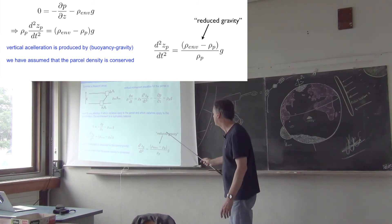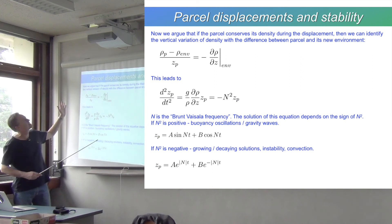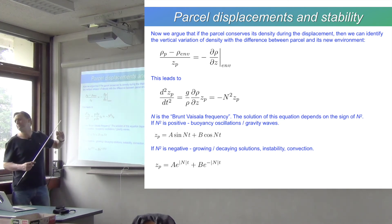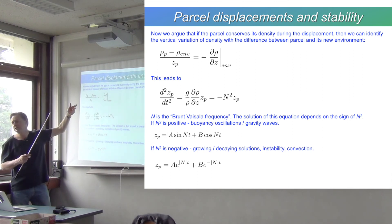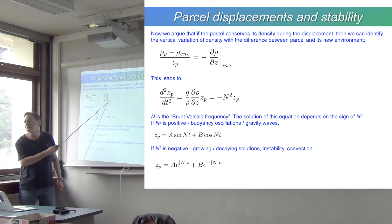This is called the reduced gravity—some small factor times g. If we argue that the parcel conserves its density during a displacement, then the vertical variation of density as the parcel moves is going to be the same as the difference between the parcel and its environment. Which means that (ρ_p - ρ_env)/z_p is just the environmental vertical density gradient.